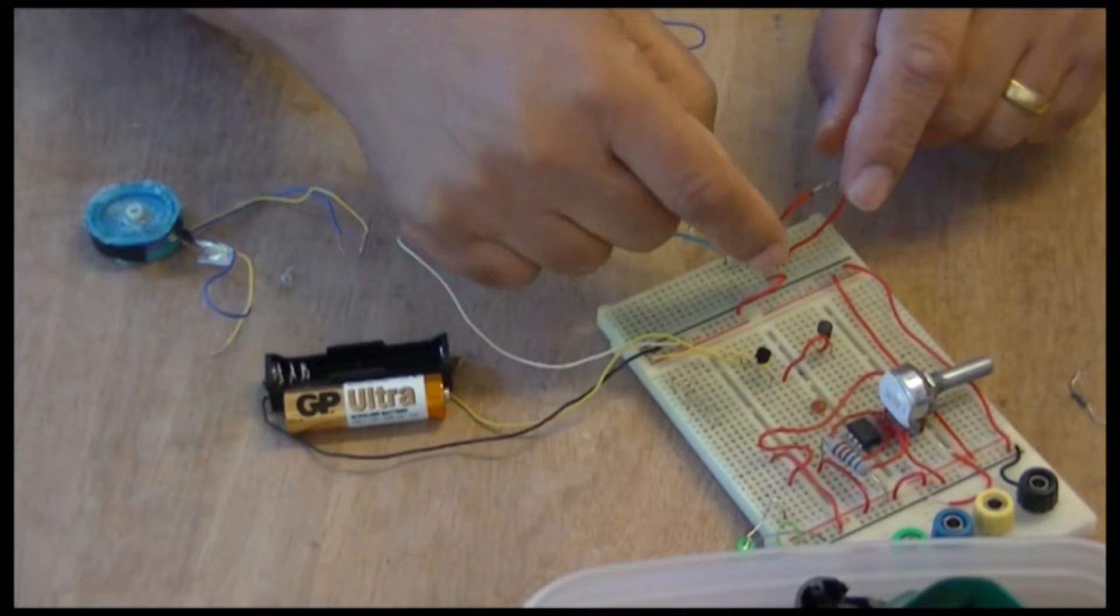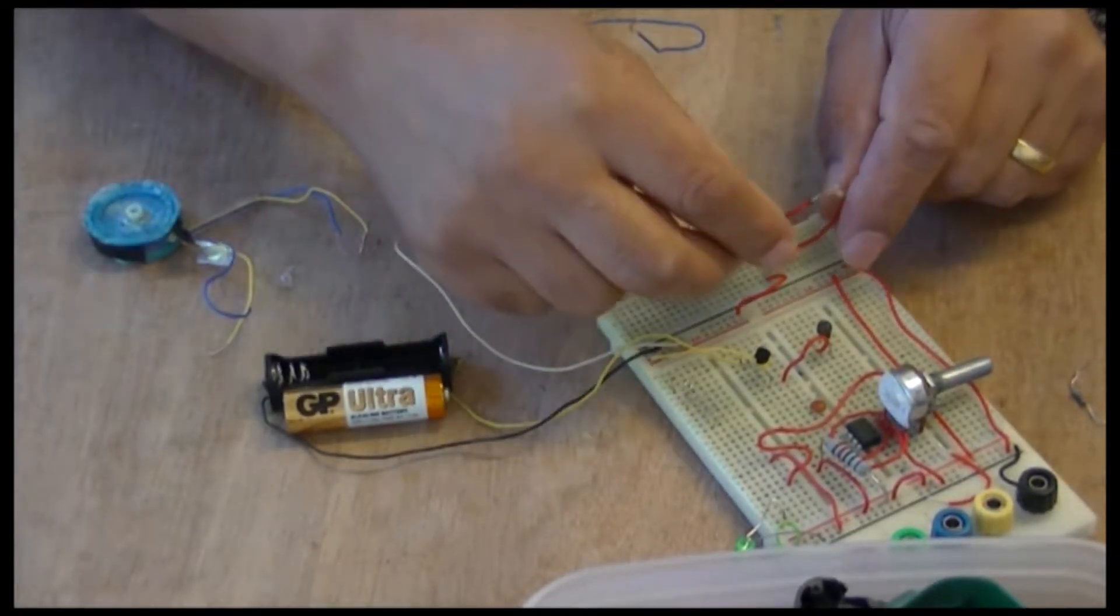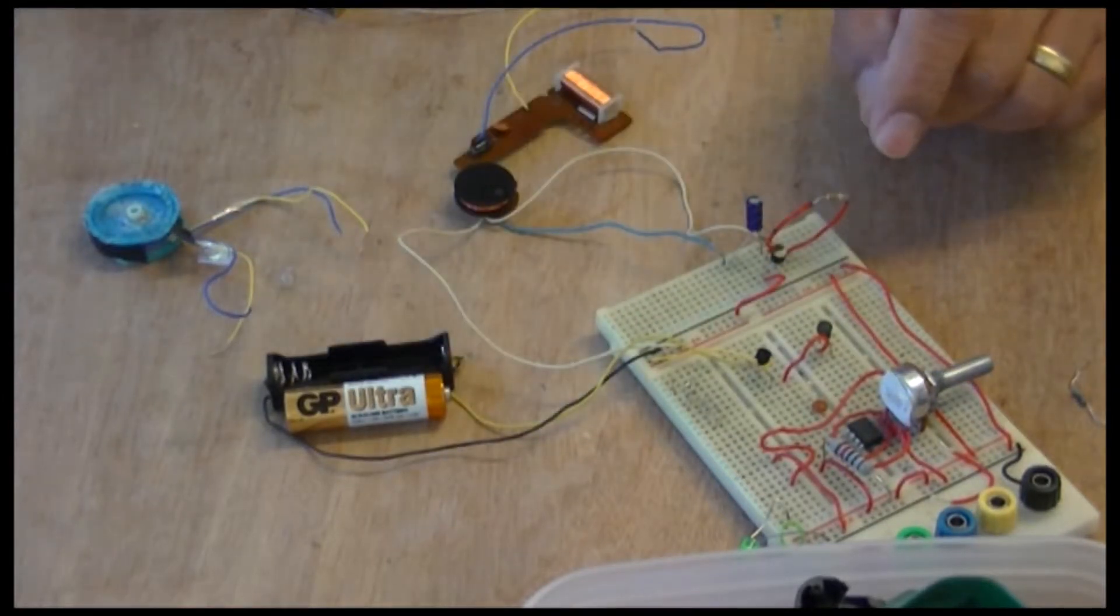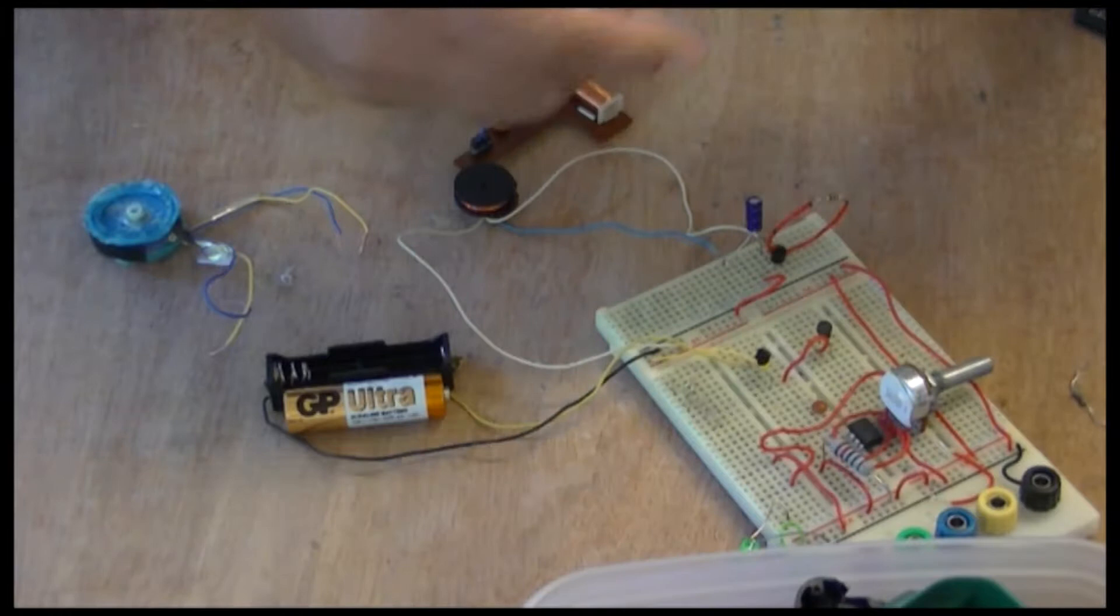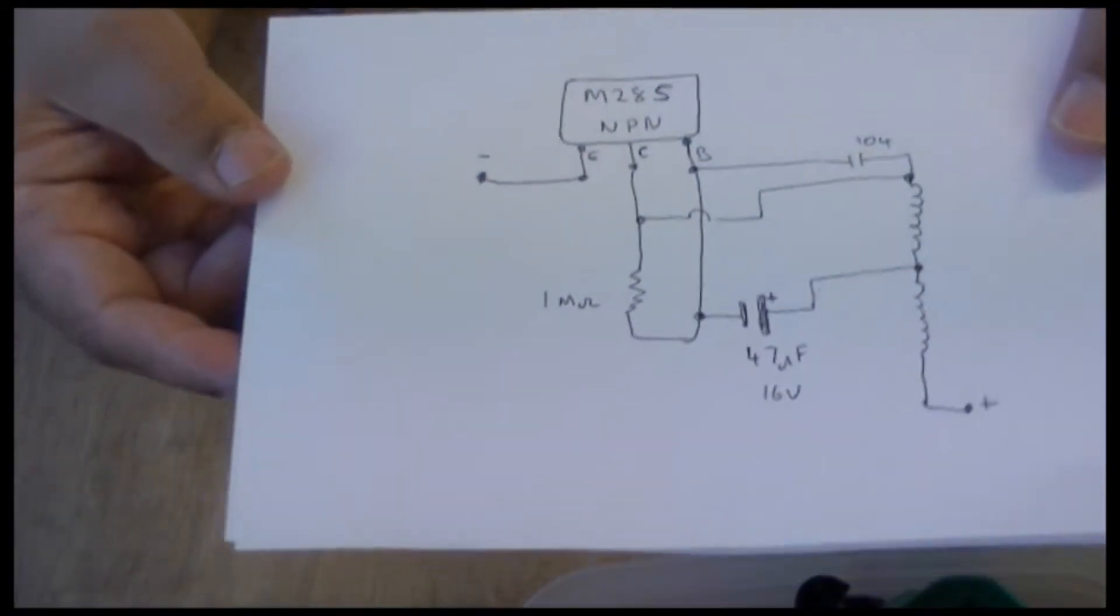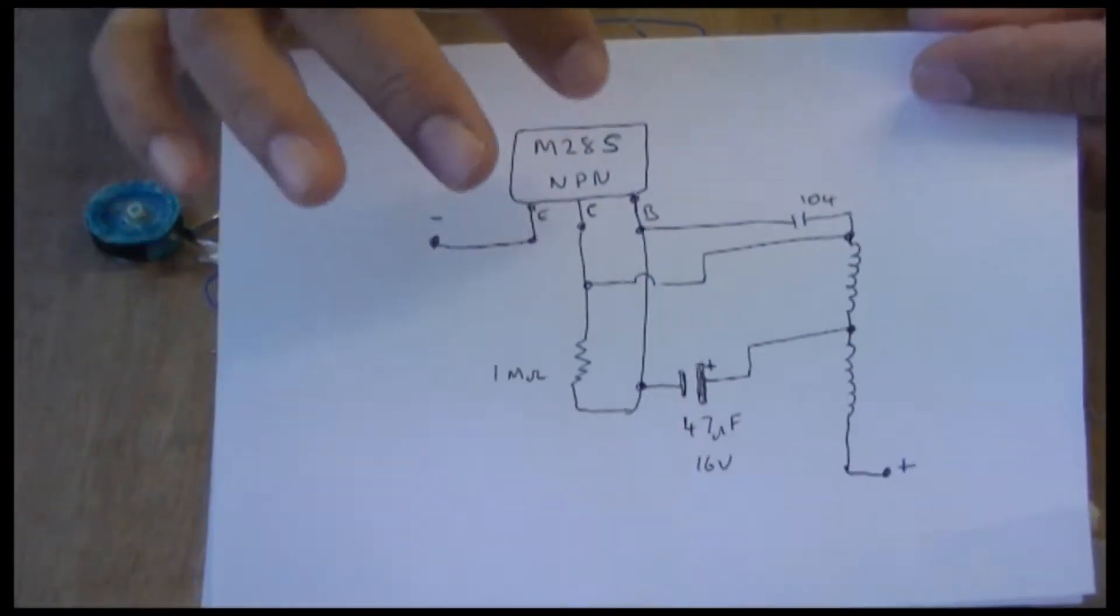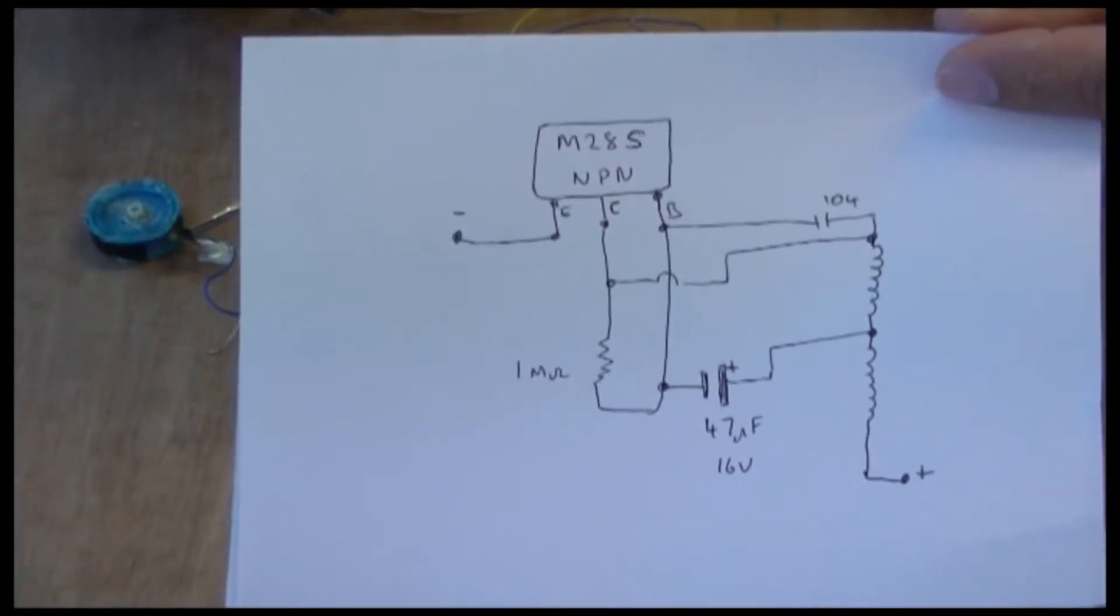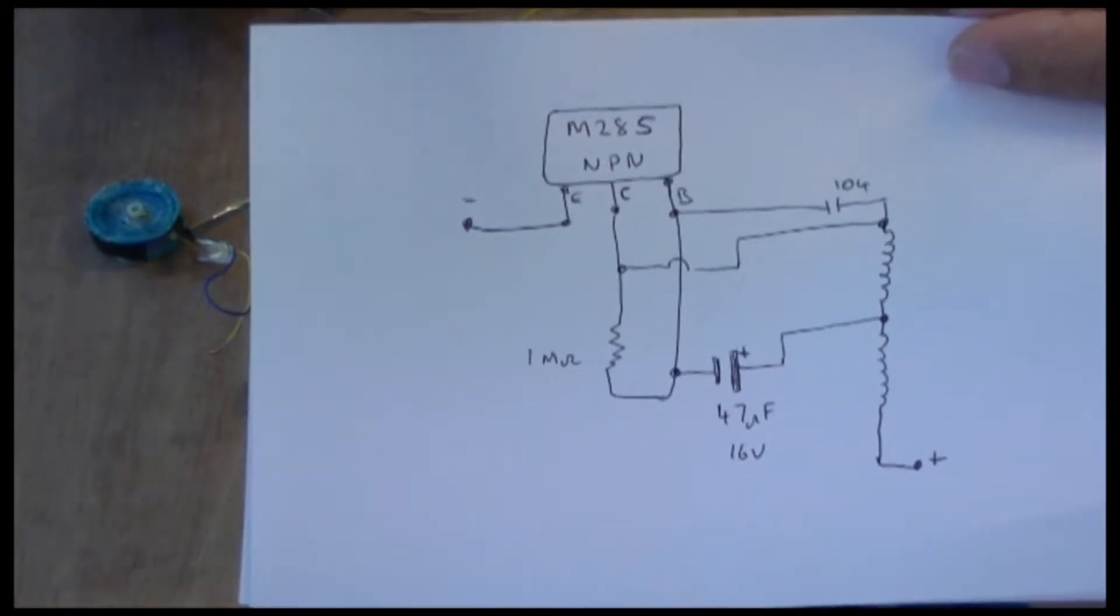What I did is I put the transistor in there, I put the one megaohm resistor there, and this is the circuit. I might as well show you the circuit first I suppose. This is the circuit here and this is the transistor they used, M28S.